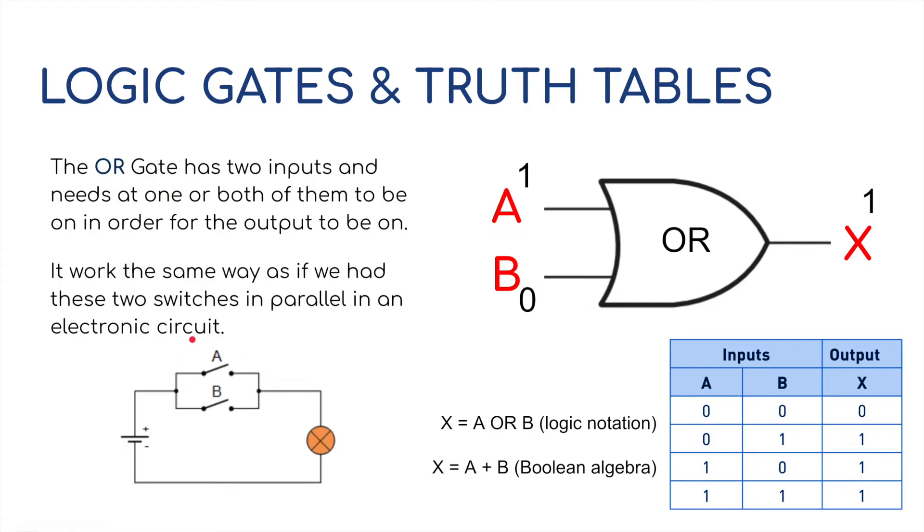In terms of an electronic circuit, it's similar to switches in parallel. If A is turned on here, the bulb would still light up. Or if B is turned on, the bulb would still light up. Or if both of them are turned on, the bulb would still light up. This is a bit strange because, obviously, X equals A or B, but in Boolean algebra, written as an expression, it's A plus B, which is bizarre because you think A plus B would be the AND gate, but no, A plus B is the OR gate.